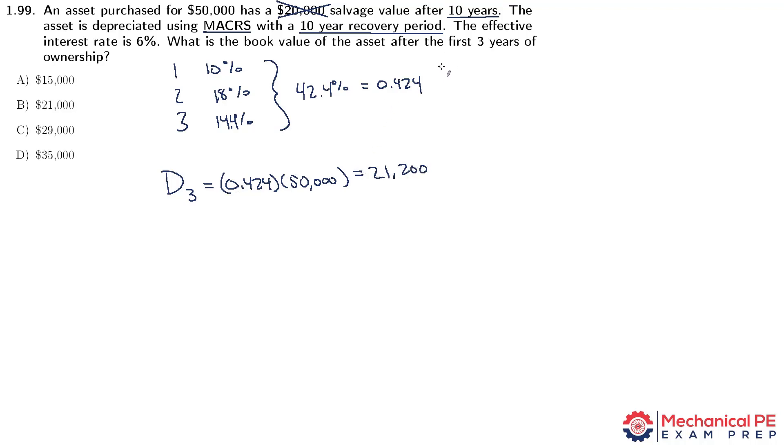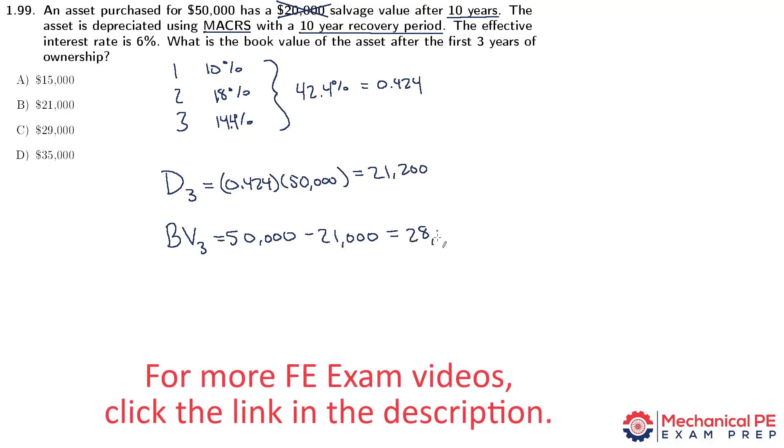The book value is the difference between the initial cost and the depreciation thus far. So the book value in year three is $50,000 minus the depreciation over the first three years, which is $21,000, and that equals $28,800, which is closest to answer choice C.